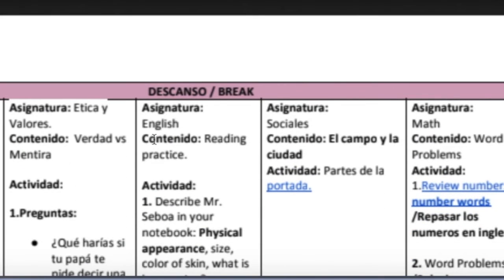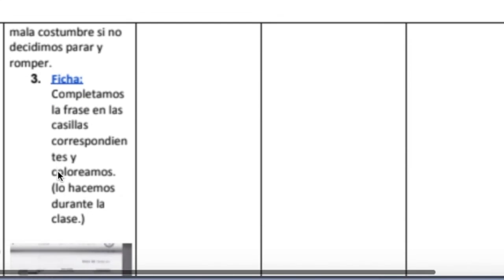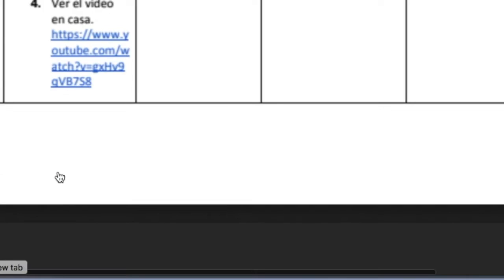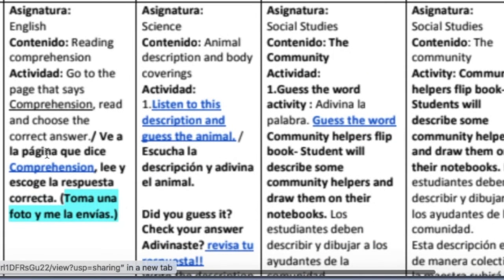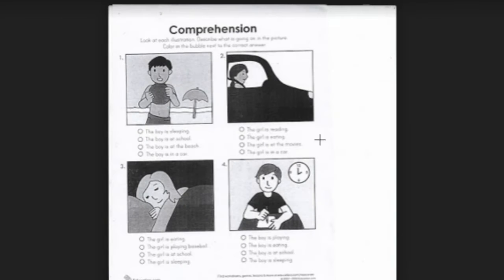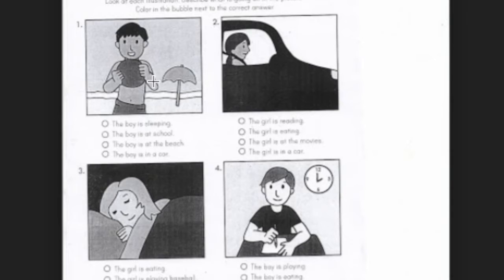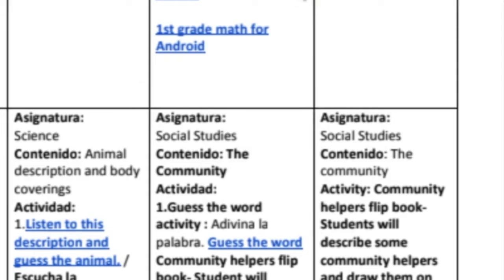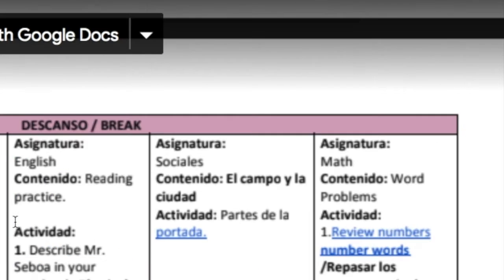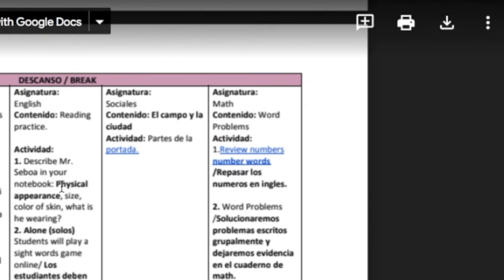After that, we have English. Entonces, ¿se acuerdan que nos quedó un documento pendiente de hoy de inglés? Lo vamos a hacer empezando la clase de inglés. We're going to work on this document. Si ya los niños lo hicieron, no pasa nada. Lo revisamos todos junticos, pero si no lo han hecho, lo vamos a hacer juntos. Es súper fácil. Vamos a leer los enunciados y vamos a escoger la frase que represente el dibujo.